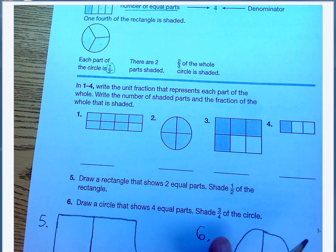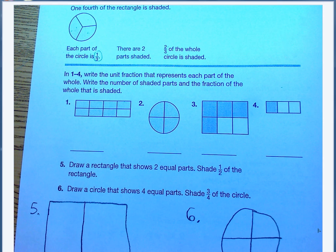Let's do a couple of our own down here. We have number one. It says write the unit fraction that represents each part of the whole, then write the number of shaded parts and the fraction of the whole that is shaded.